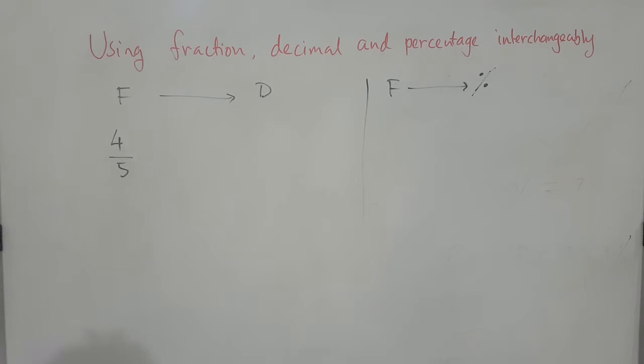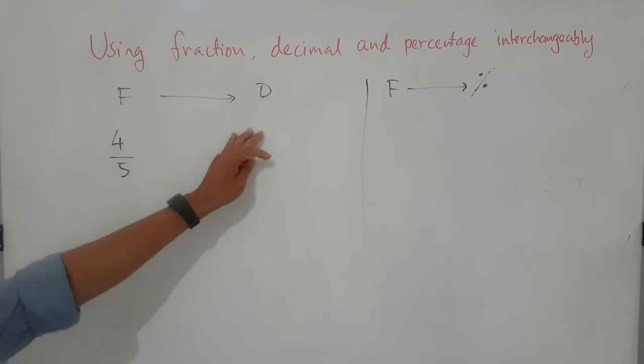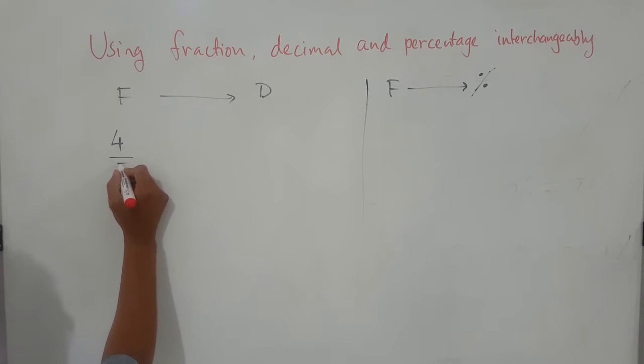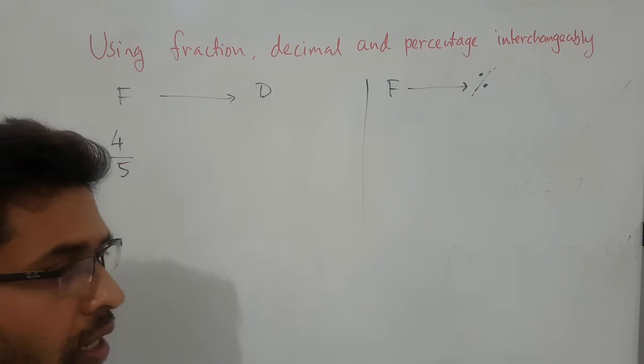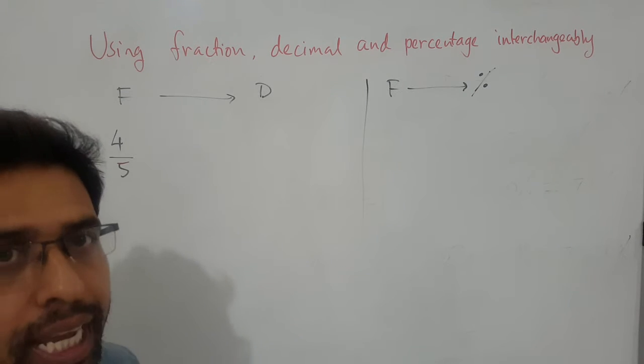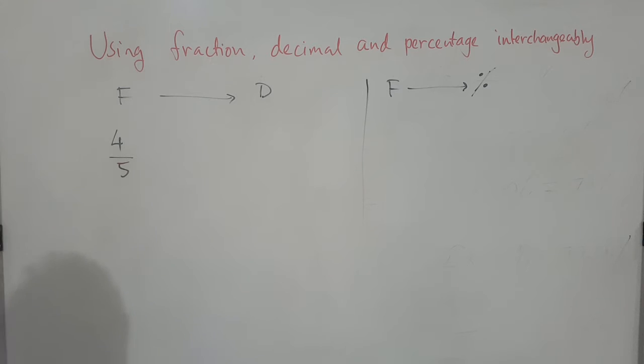So in this case, 4 over 5, if I ask you to convert to decimal, you can easily, if you have a number in the denominator that is a factor of 100 or 10, then it is easy. You can easily convert it to decimal.